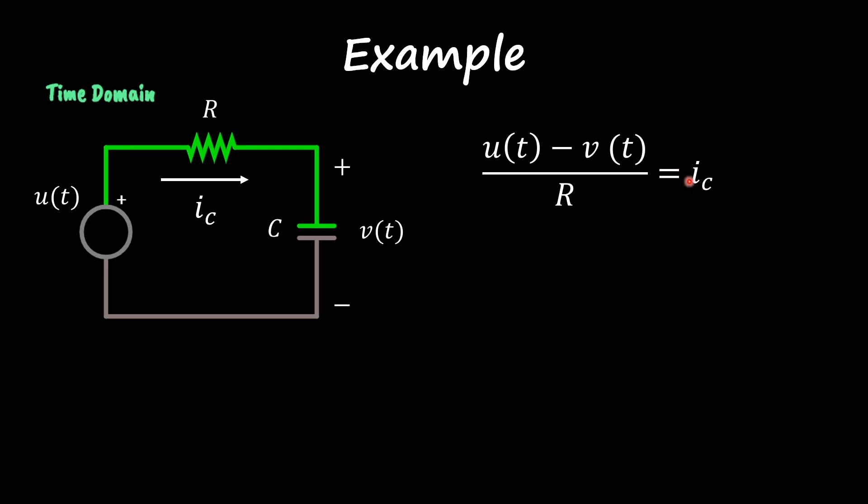I also know how to relate the current flowing through the capacitor and the respective voltage across the capacitor, which is ic = C dv/dt. If I plug this equation in at the top and manipulate things around, I get the following differential equation.